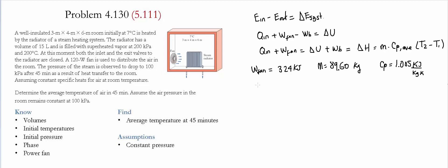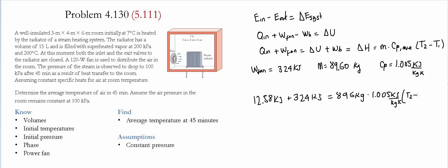Substituting into the equation: 12.58 kJ + 324 kJ = 89.60 kg × 1.005 kJ/(kg·K) × (T2 − 7°C). Solving for T2, we find the final temperature is 10.7°C. The total temperature change over this process is 3.7 degrees, occurring over approximately 45 minutes.